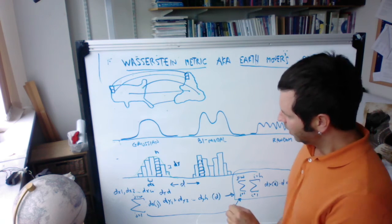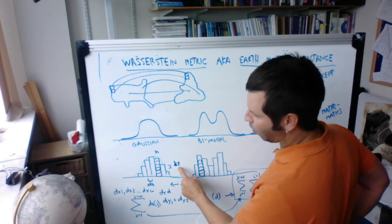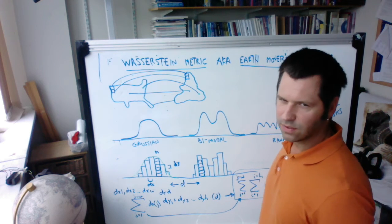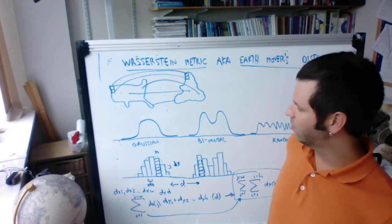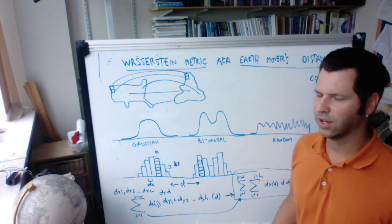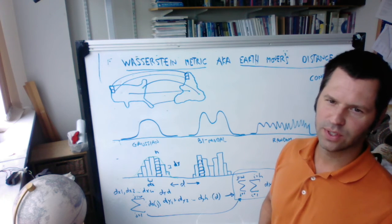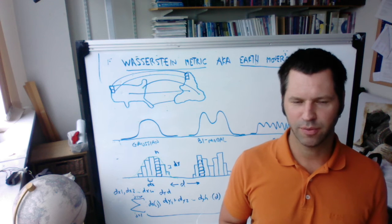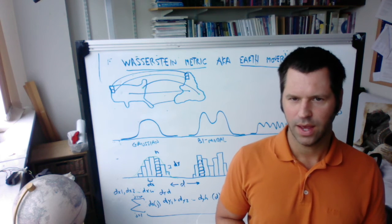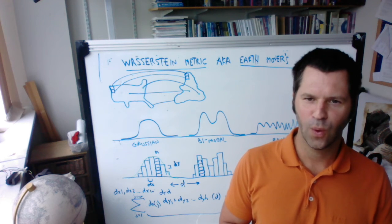One more thing to mention: these are the discretized versions of the distributions. The smaller dy is, the more accurate the approximation will be. And the smaller dx is, the more accurate the approximation will be. However, the smaller dy and dx are, the longer the computation takes — so there's a trade-off between accuracy and computation speed. I hope that helped. When you start to read about the Wasserstein metric, or the earth movers distance, in a scientific paper, I think it's going to make a lot more sense now. Thanks for watching and for your attention. If you have any more questions, just let me know.